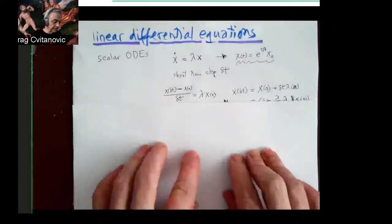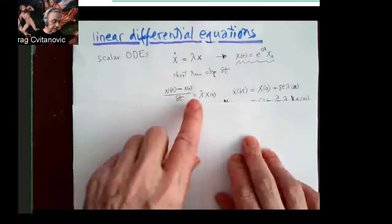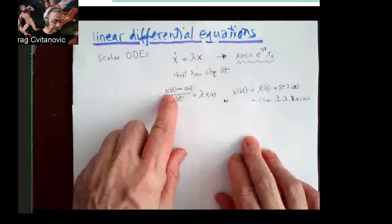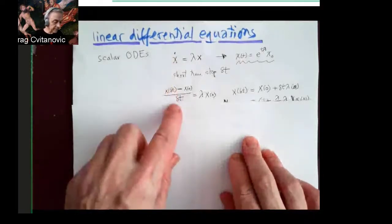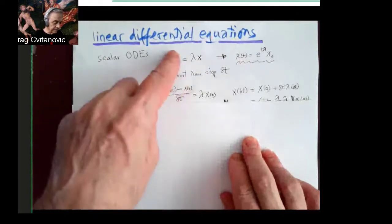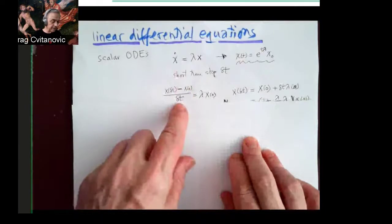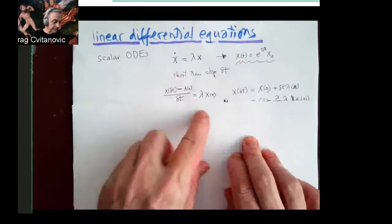Look at the infinitesimal time difference, so difference between starting point and point delta time later. The derivative is defined as this ratio of how far I've gone time T divided by time delta T in the limit of infinitesimal delta T.